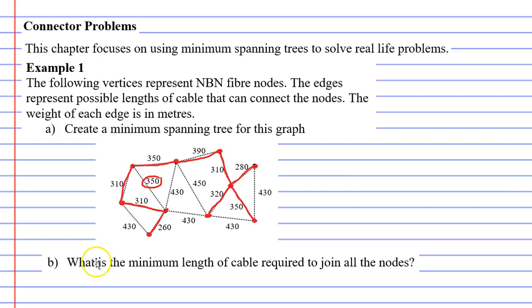Now moving on to question B, what is the minimum length of cable required to join all the nodes? I'm going to add together all of these lengths, starting at 260, then adding 310. I'm just following along the edges, plus another 310, plus 350,